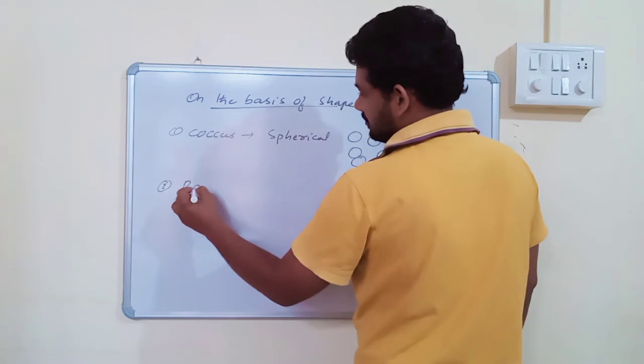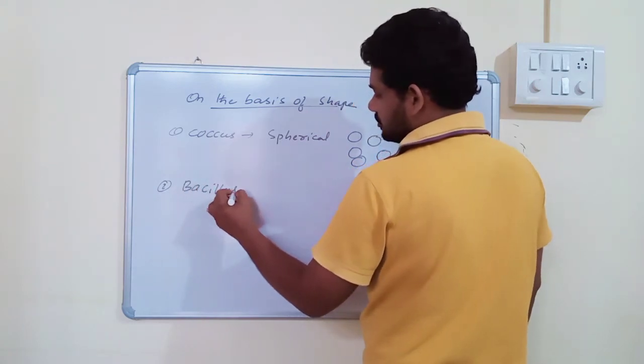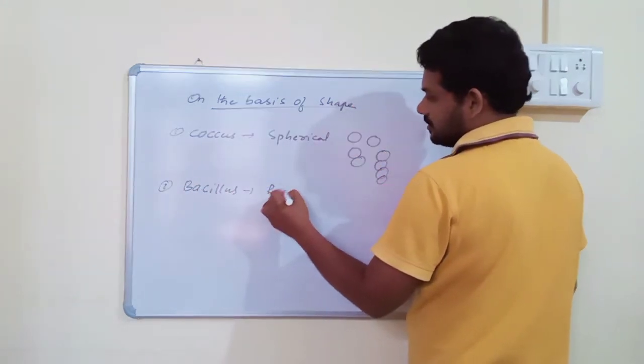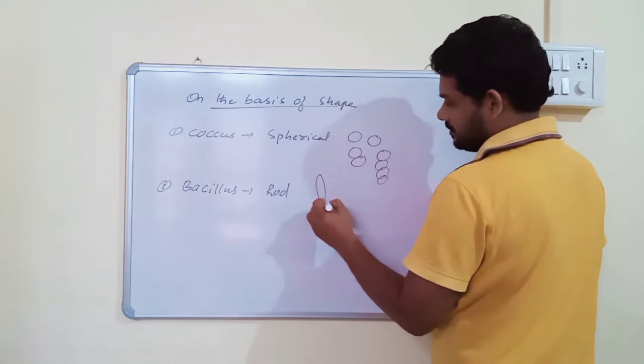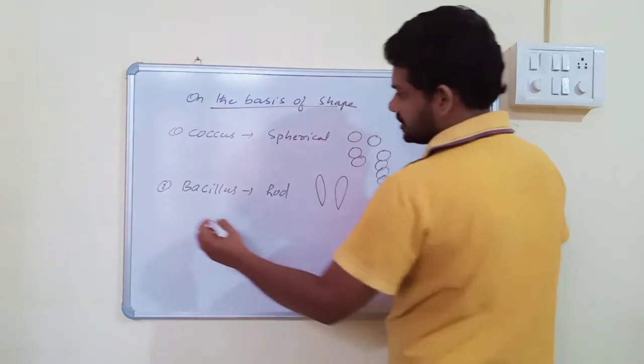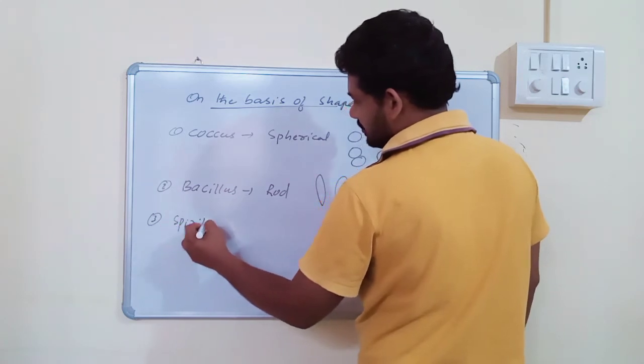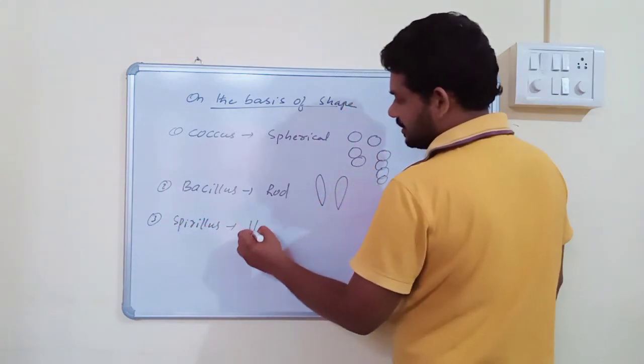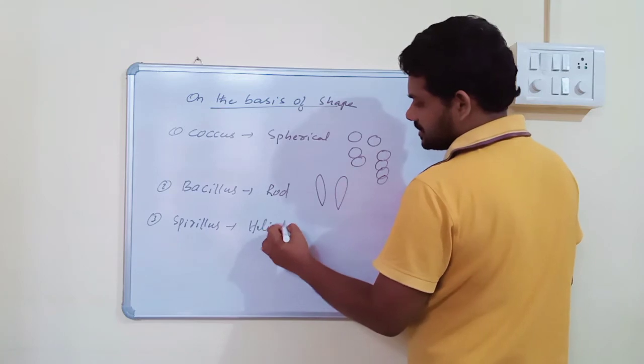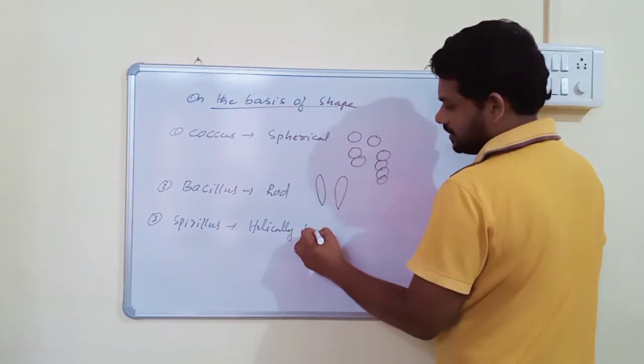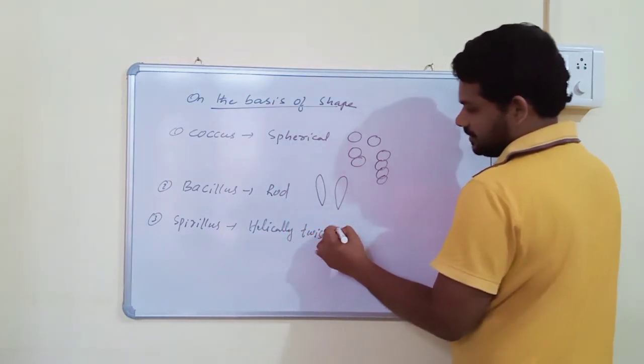Next, Bacillus. Bacillus are rod-shaped bacteria. Next, Spirillum. These bacteria are helically twisted. They are helically twisted.